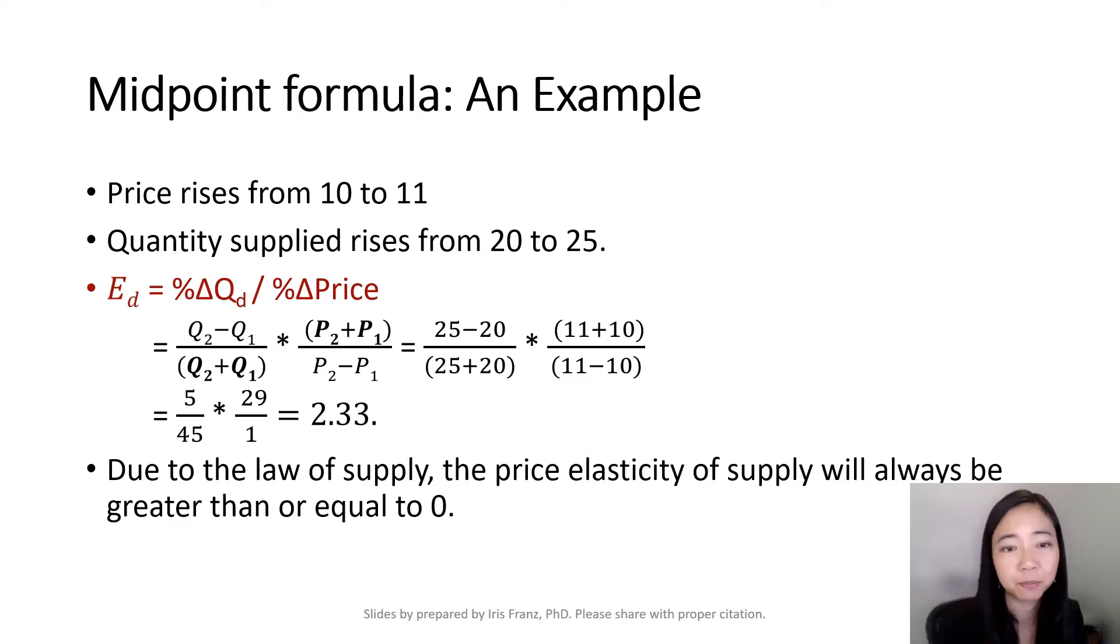You have 25 minus 20 over 25 plus 20 times 11 plus 10 over 11 minus 10. And you plug that into your calculator, you get 2.33.